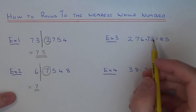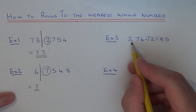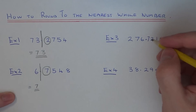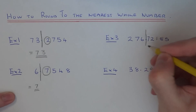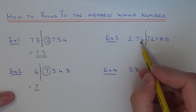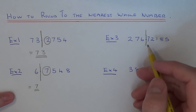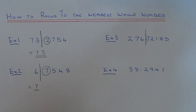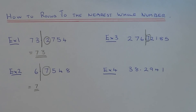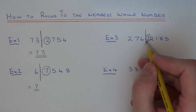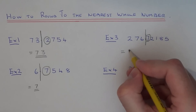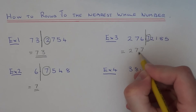So let's move on to example 3. This time we've got 276.72185. We need to cut the number off at the decimal point after the units. If we round the number down it would be 276; if we round the number up it would be 277. We just need to look at the number after the decimal point in the tenths column, which is a 7. Since this is 5 or above, we need to round the number up, so our answer is closer to 277.